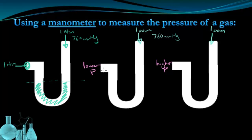In the manometer that's exposed to lower pressure, we're going to see that the level of mercury is higher on one end than on the other.